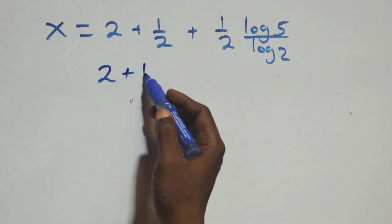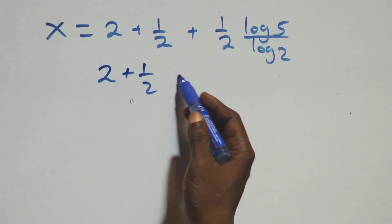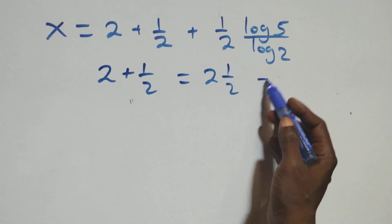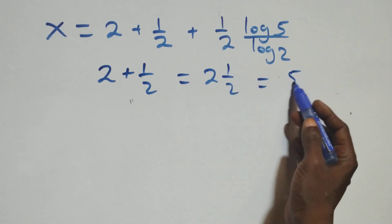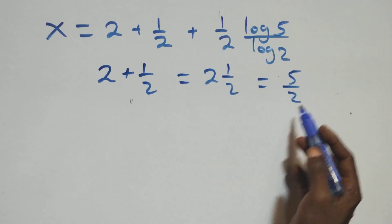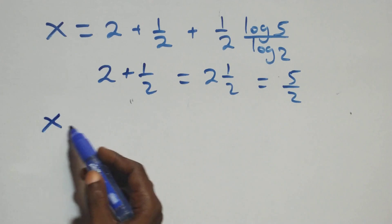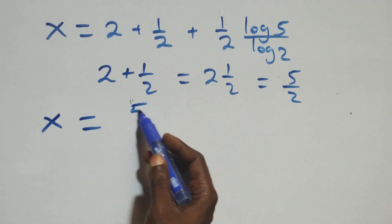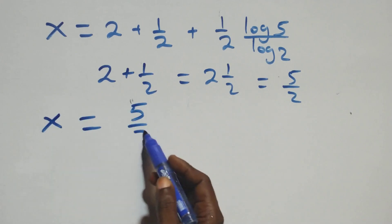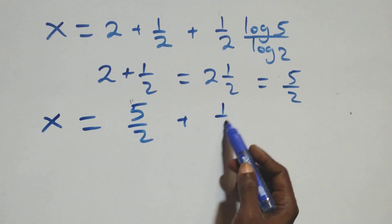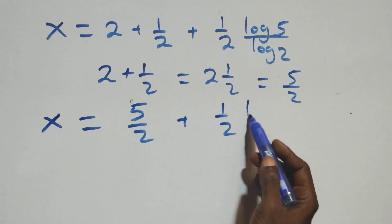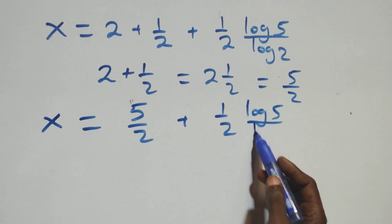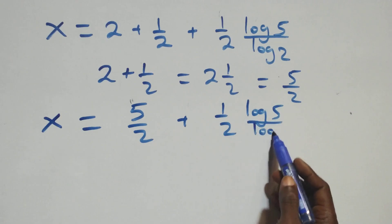So 1 plus 1/2 equals 3/2. Wait — combining: 2 plus 1 over 2 is the same as 5 over 2. So we have x equals 5/2 plus (1/2)(log 5 over log 2).